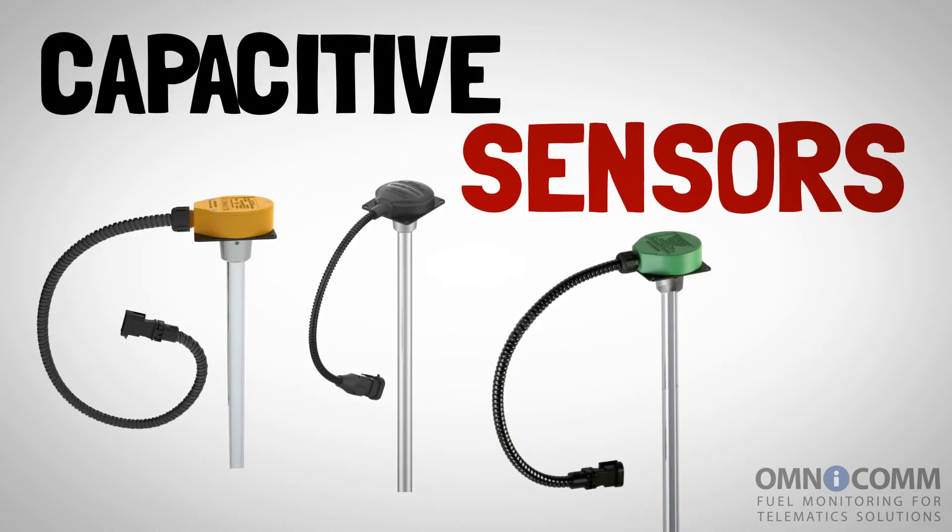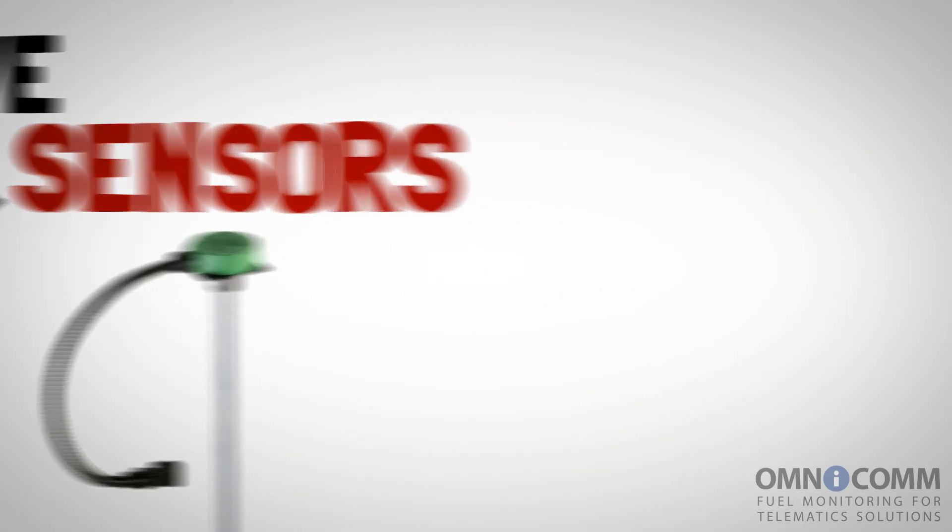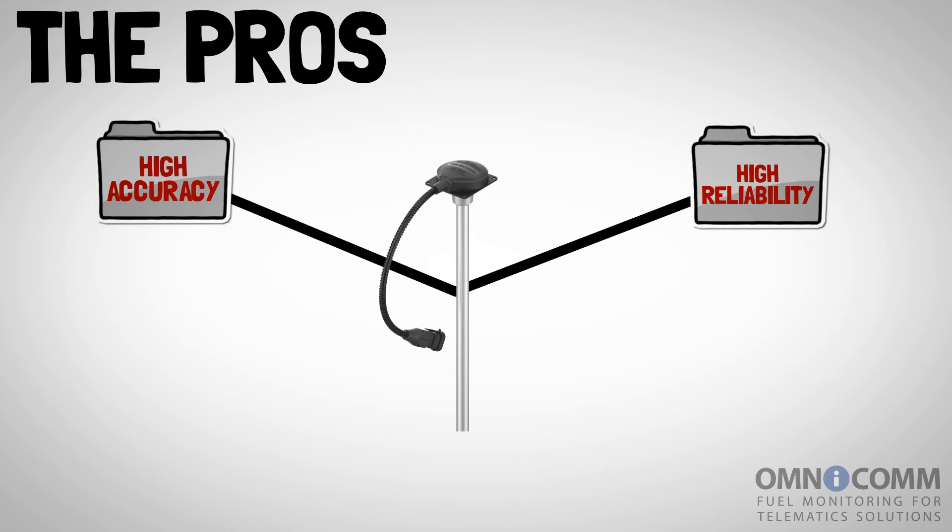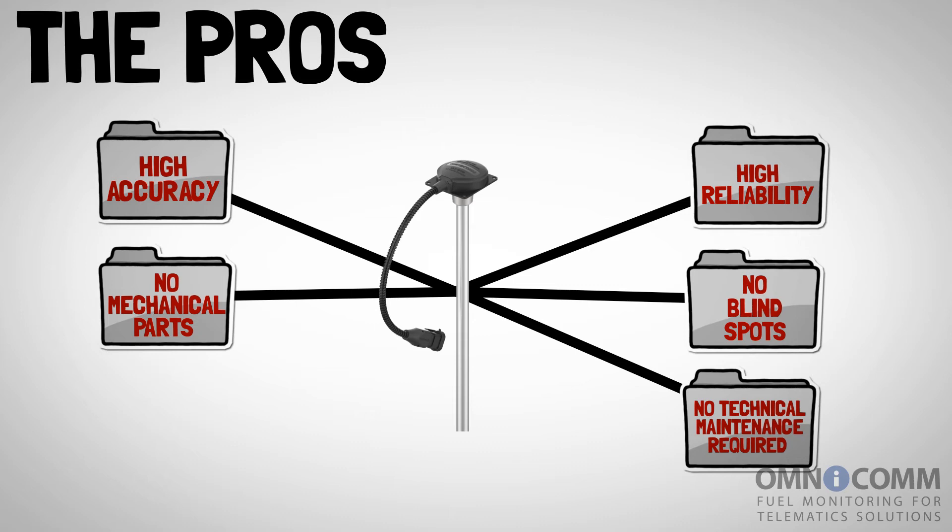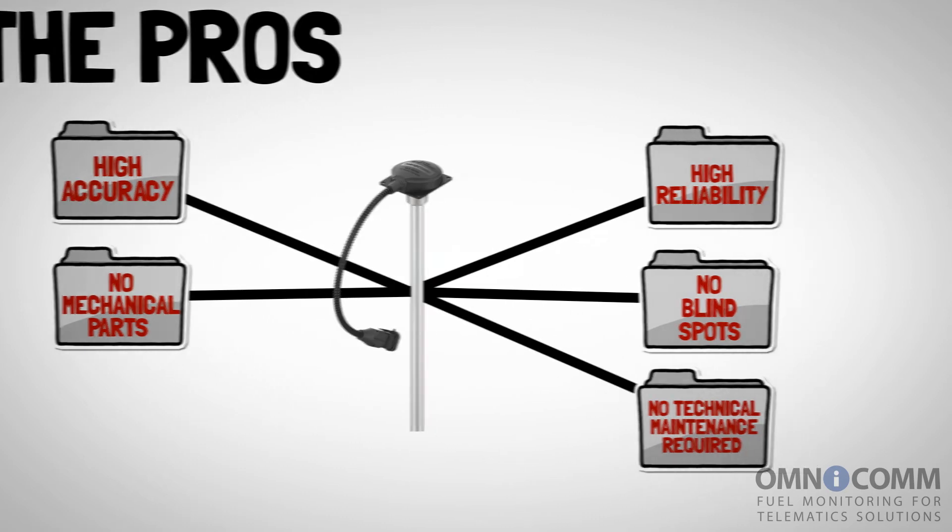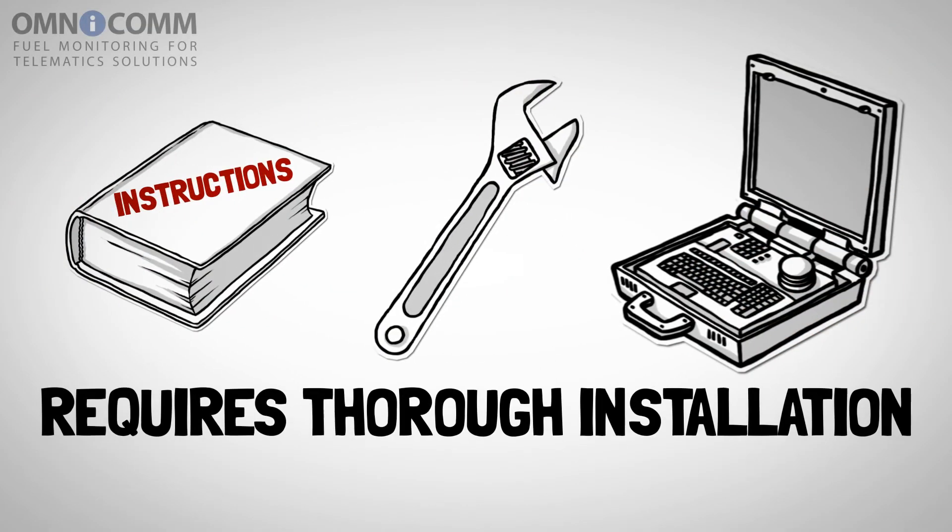Capacitive Sensors. Coming from the aviation industry, this is by far the most popular fuel-level monitoring technology and the most accurate one, too. Its main principle of operation is measuring the capacity of the condenser as it fills up with fuel. The condenser itself is a coaxial-type probe. They are highly accurate and reliable, there are no mechanical parts involved in their installation, and there are no blind spots to the readings of any kind. Moreover, they do not require technical maintenance over their lifetime.